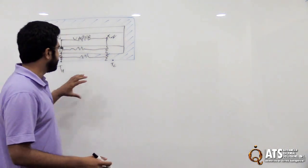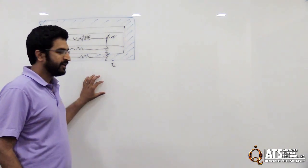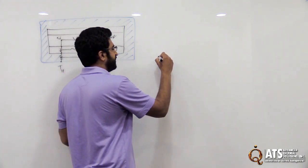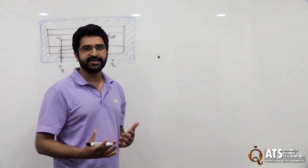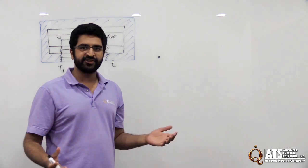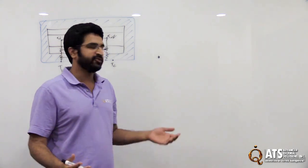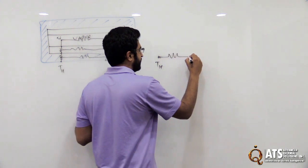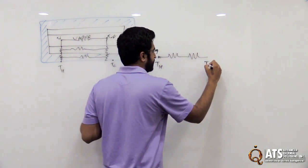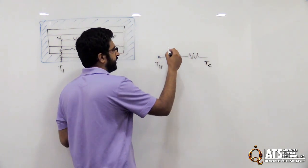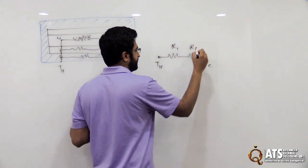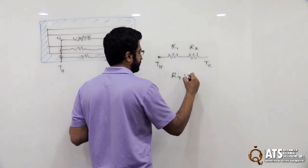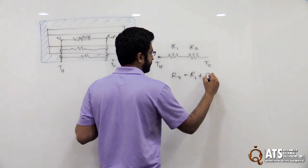Alright, so before I go into the big equation, let me just touch upon some fundamentals. As you know, the resistance concept in heat transfer works the same way as it works in electricity. So if I have my T hot here and two resistors and T cold, then in order to combine these resistances, my R total will be R1 plus R2.